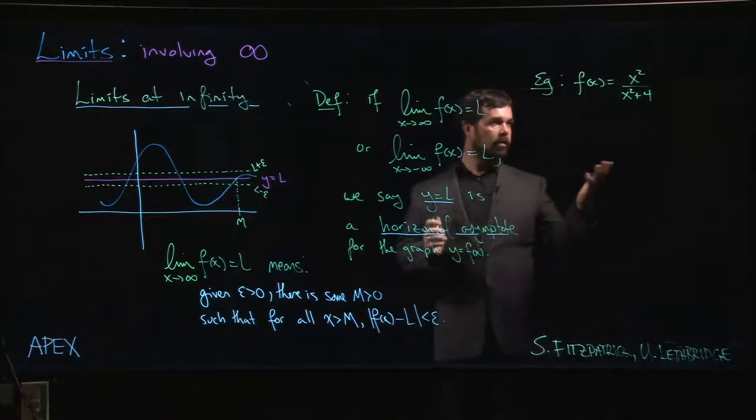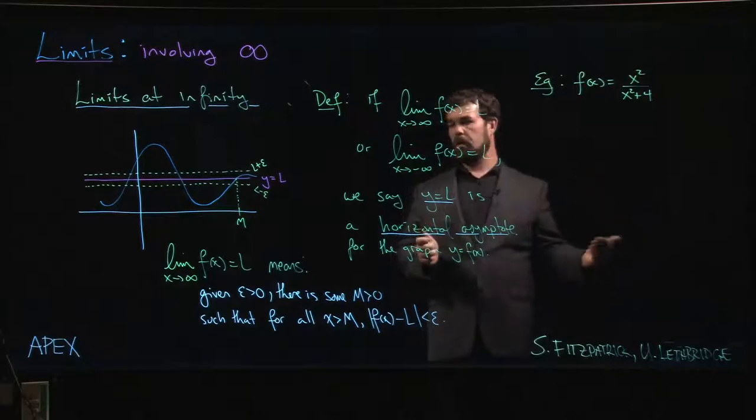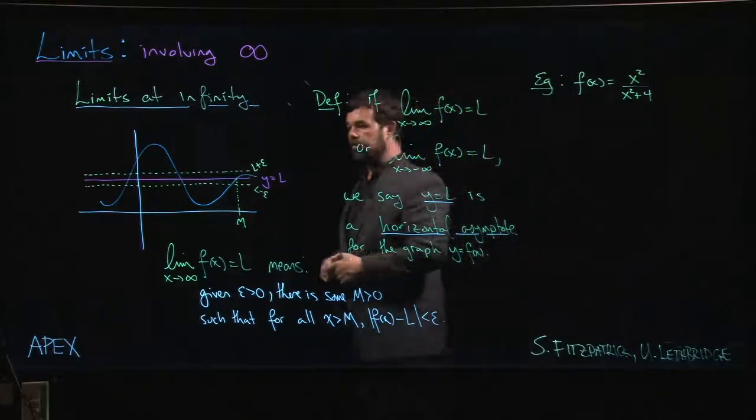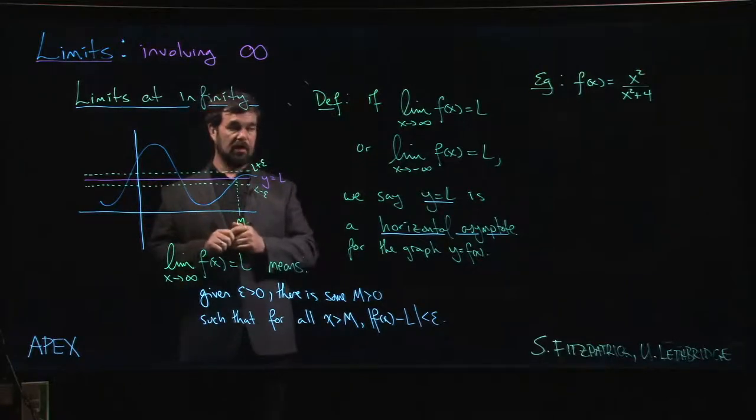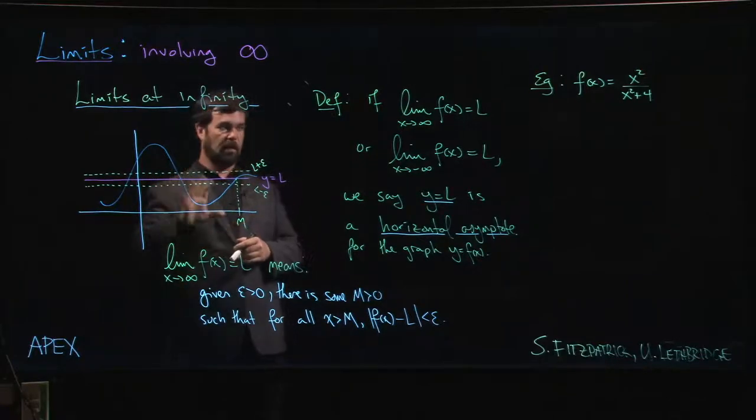Take a quick look at an example here. Here's a function. We want to determine the limits at infinity. We want to illustrate that this function has a horizontal asymptote like we see in this picture here.